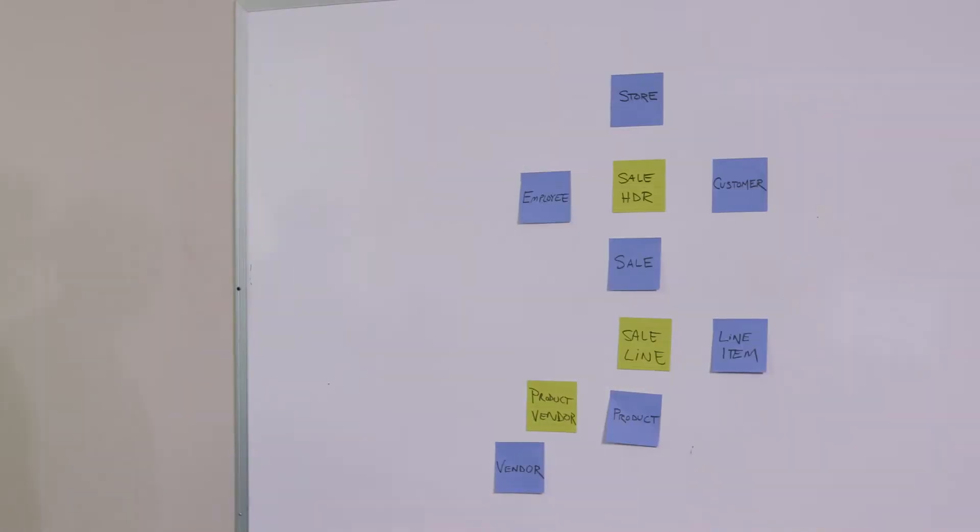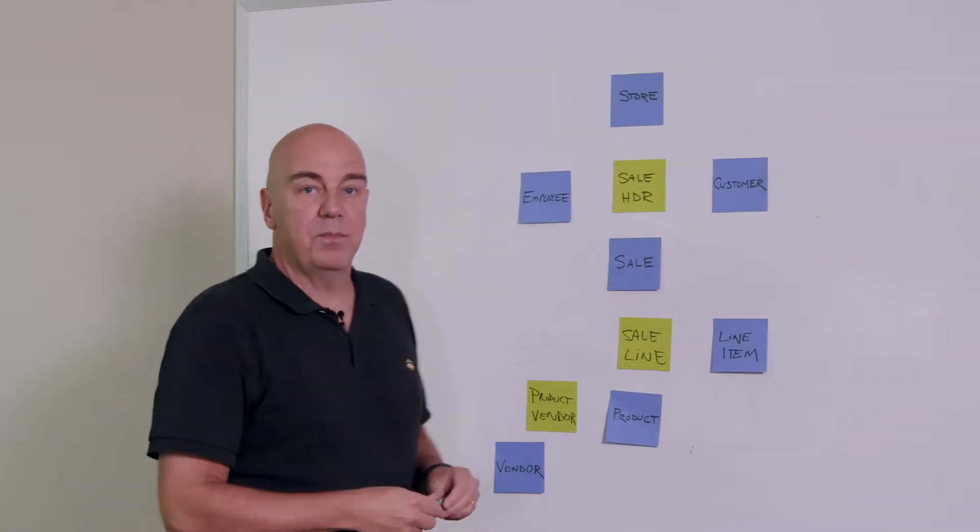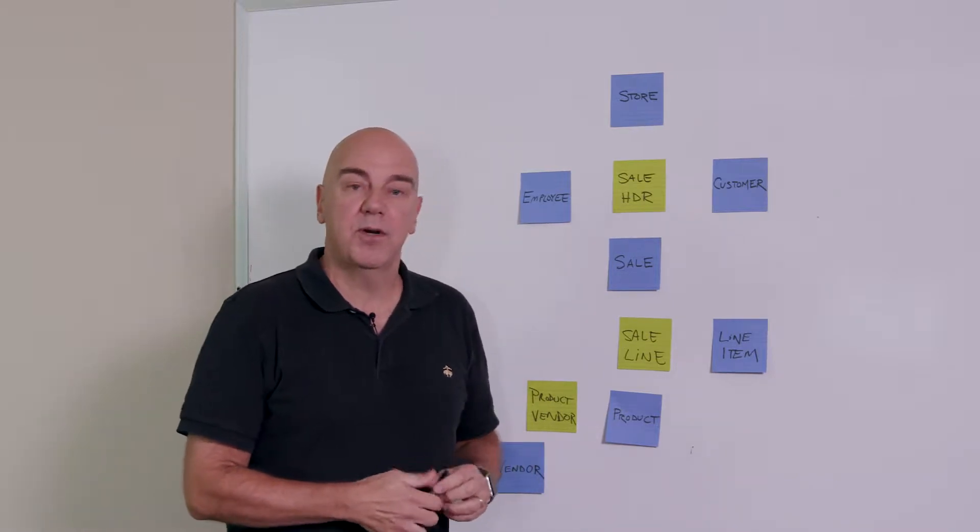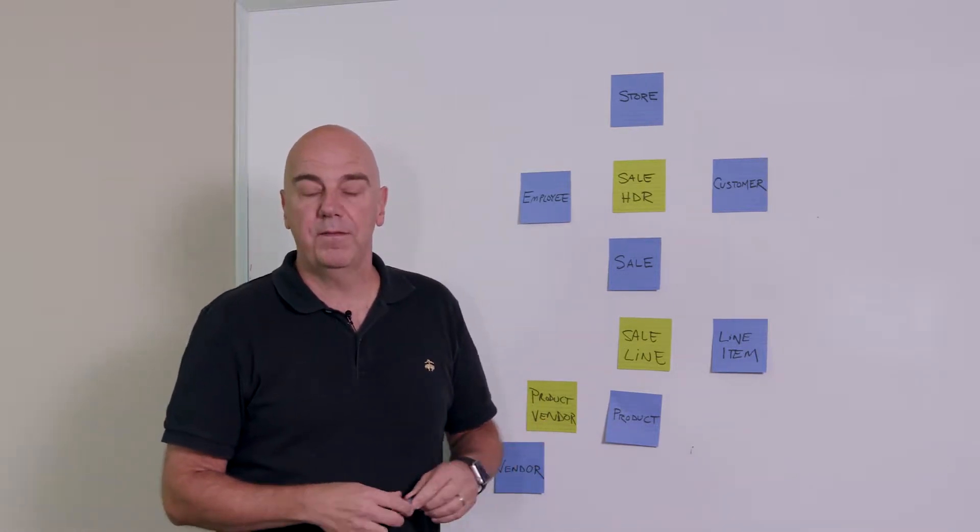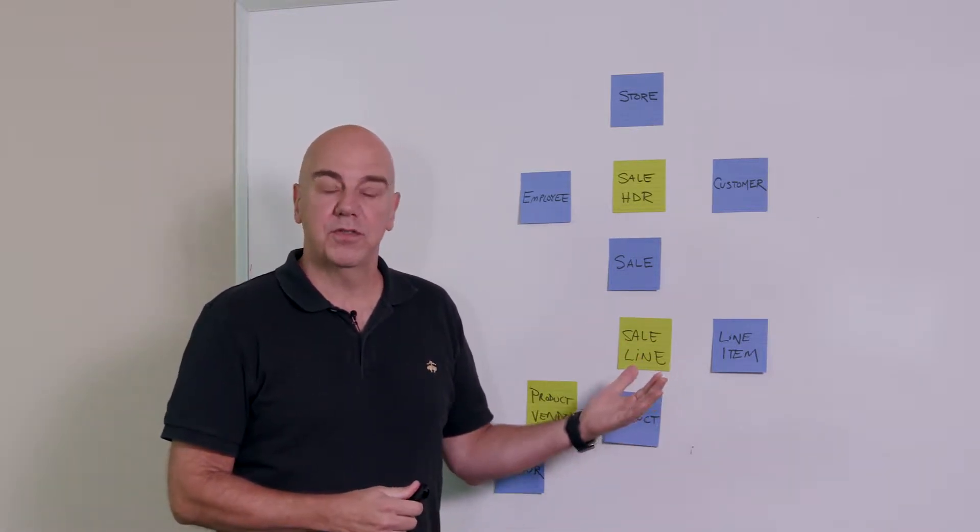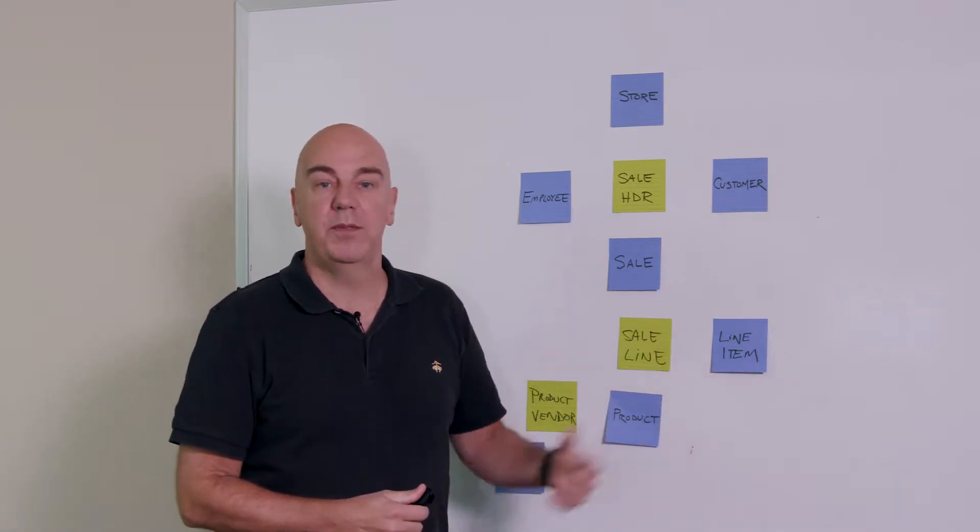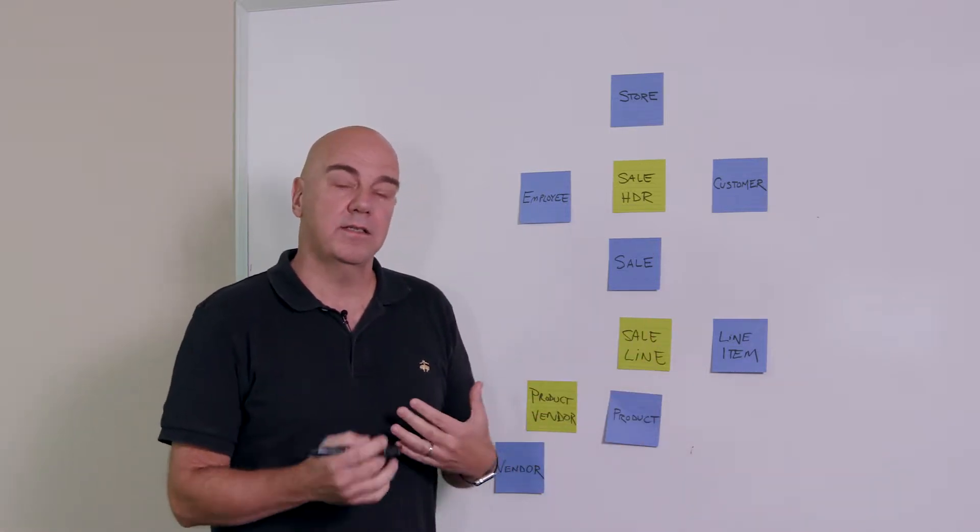In the last step of the ensemble logical modeling process, we now start to talk about the actual attributes, the context attributes that will describe each of these things. Now I'm not going to list a whole bunch of them for you here. I'll just talk mainly in categories.